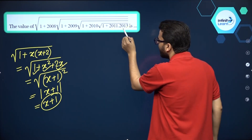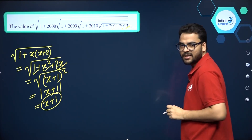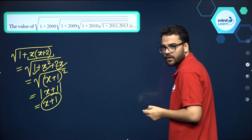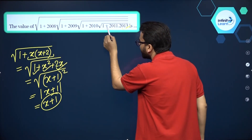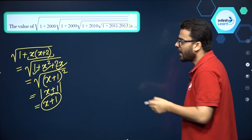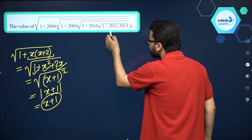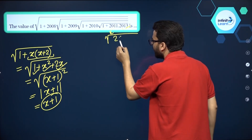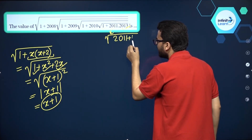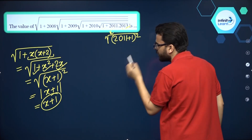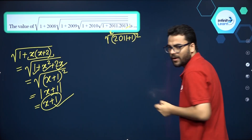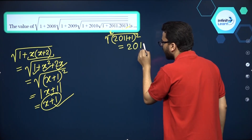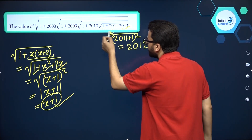You see 2011 into 2013 — so it is of the form X into X plus 2, and 1 is there inside the square root. So basically, this will give you square root of 2011 plus 1 whole square. It must come out equal to X plus 1, meaning it equals 2012. So this innermost square root gives you 2012.